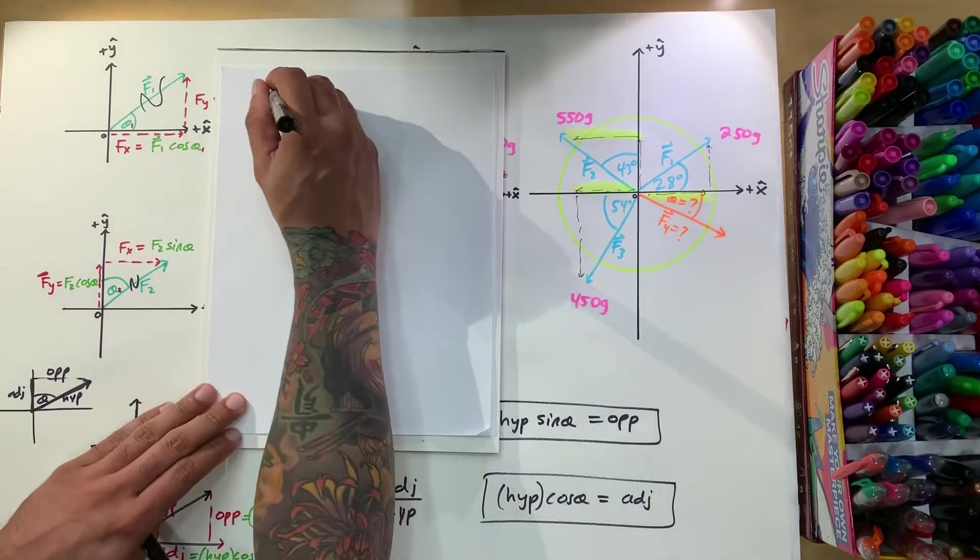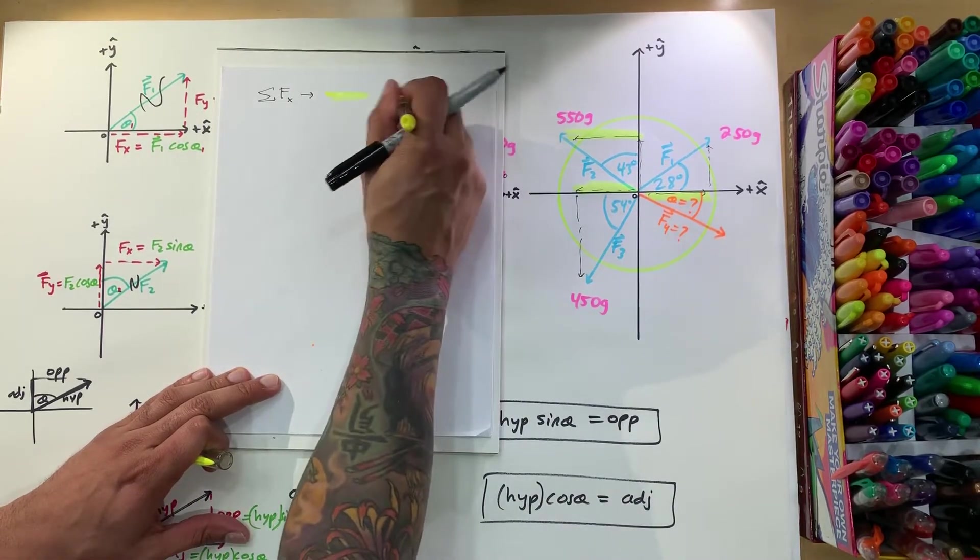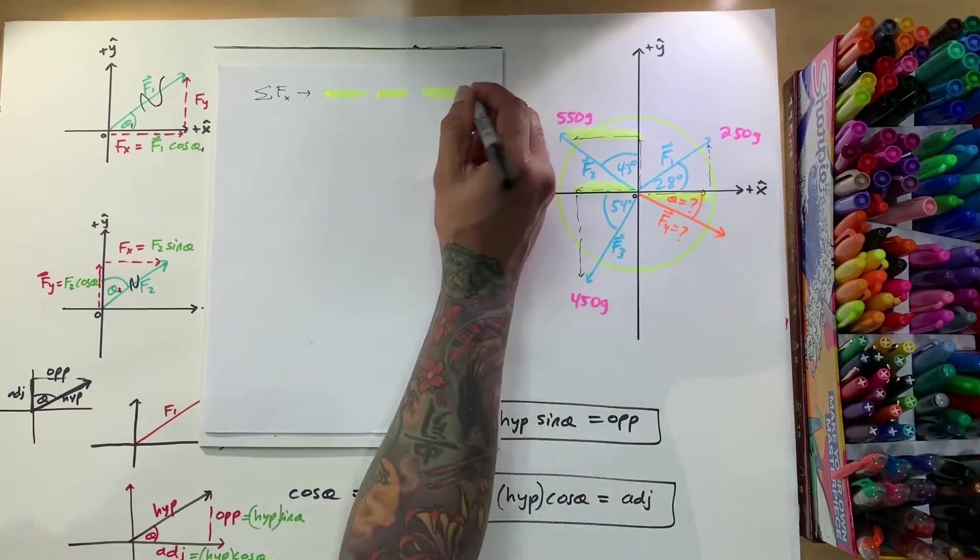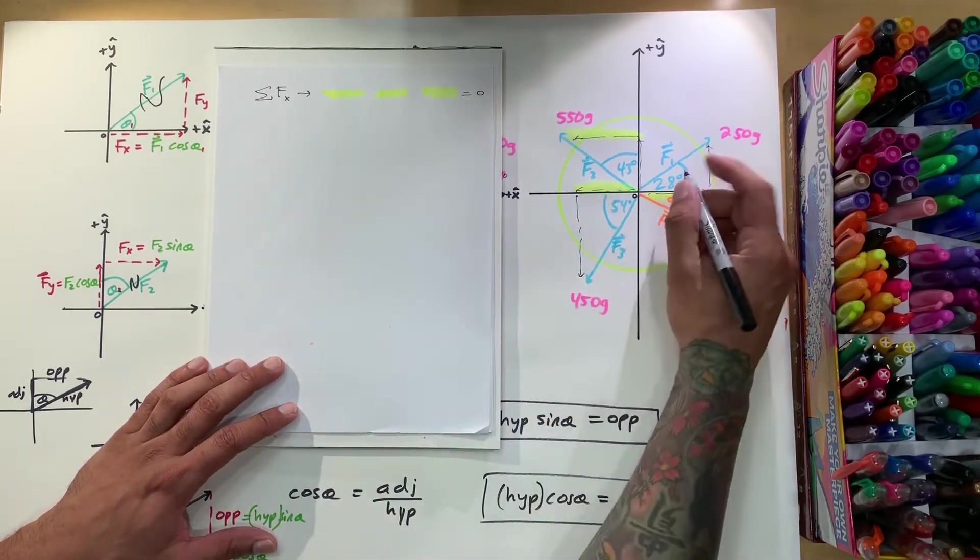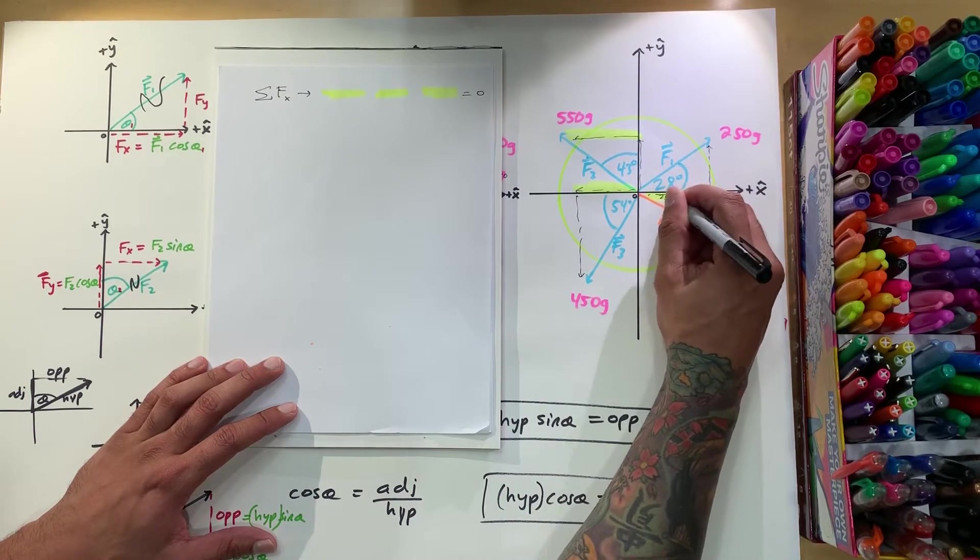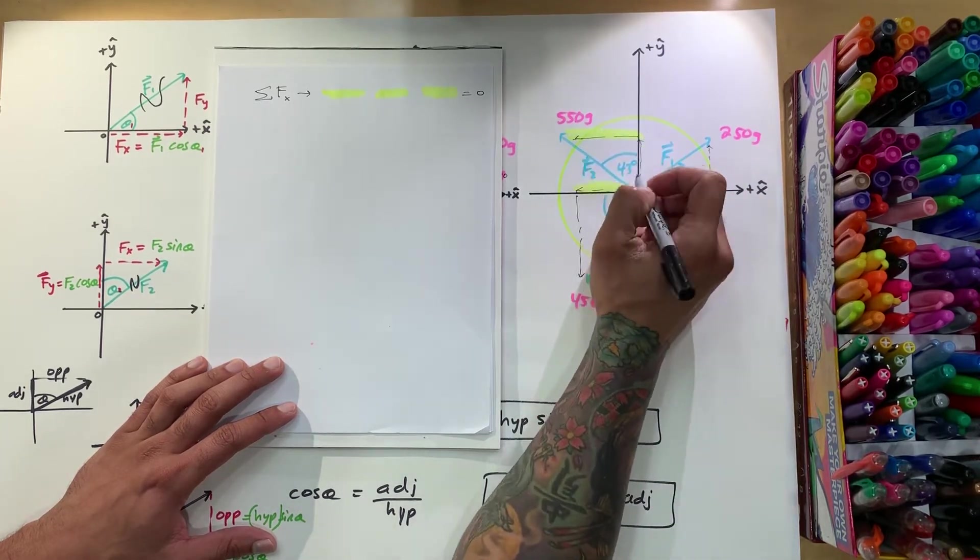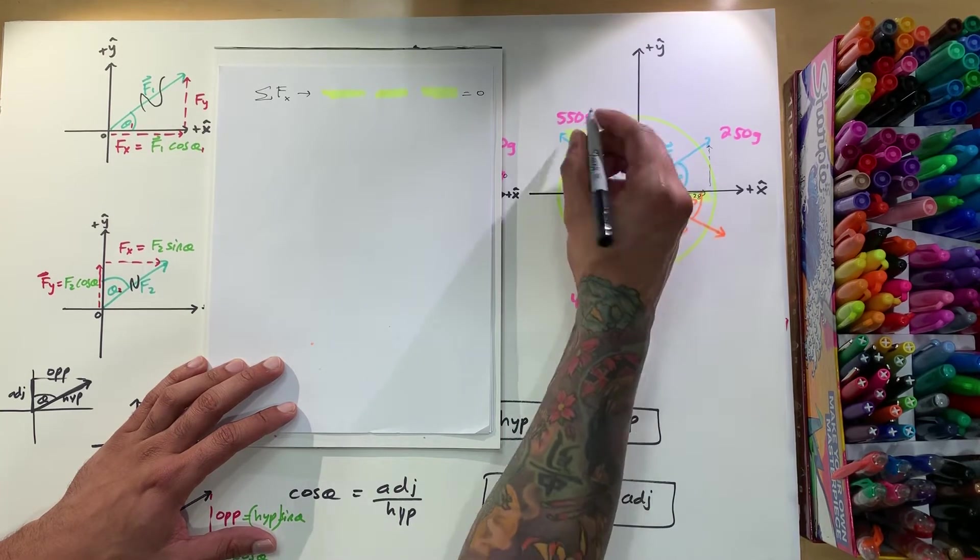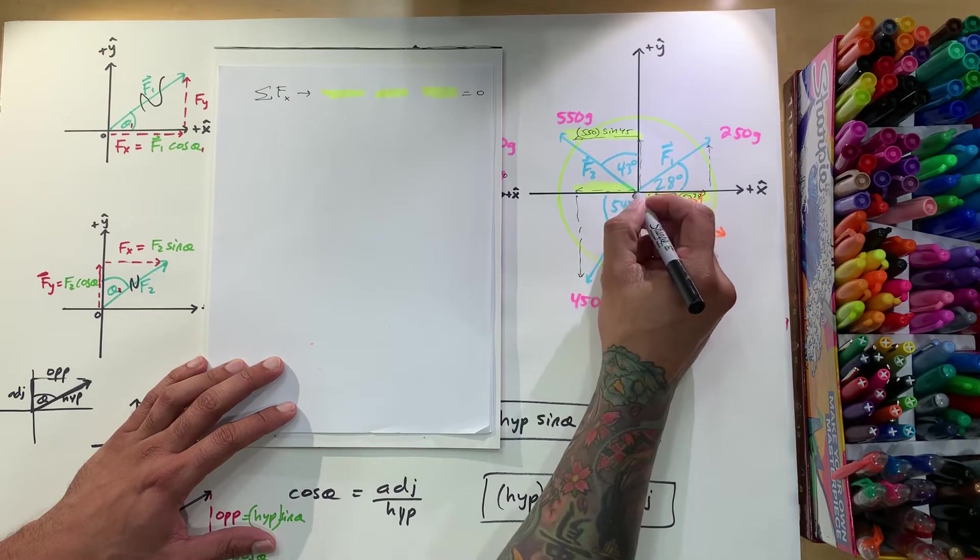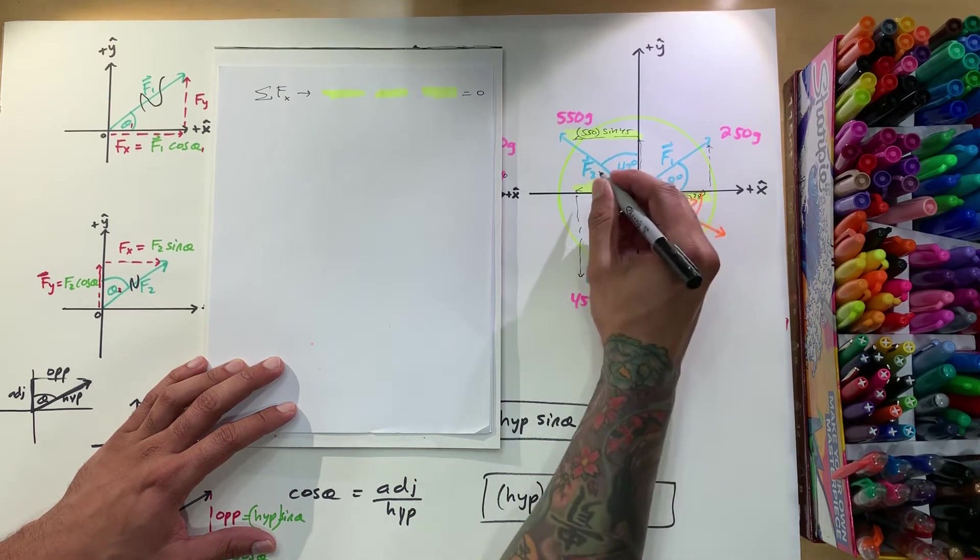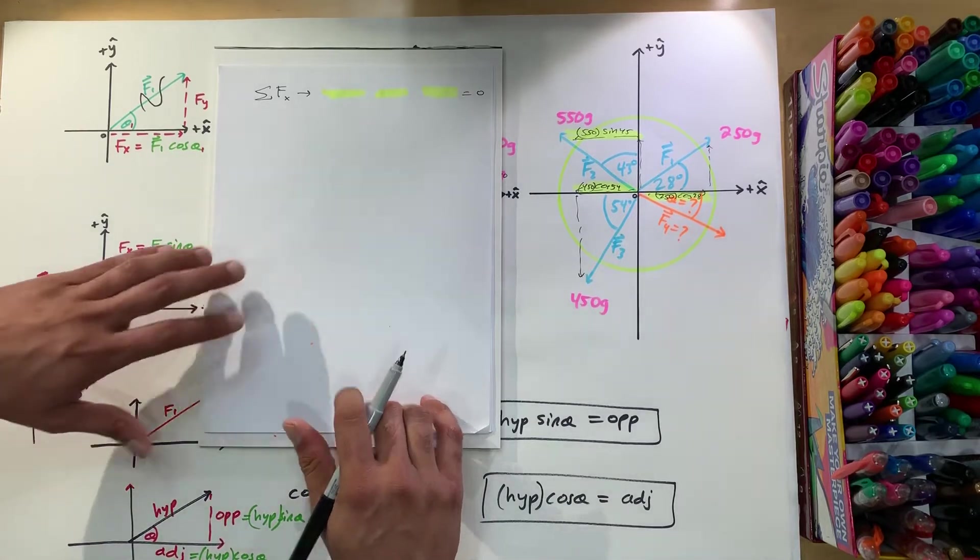Okay, sum of forces in the x direction. And let's put these three highlighted spots. Alright, remember that everything is at equilibrium, so it's going to be equal to zero. So what do we got? We have, for f1 here, we have 250, which is the hypotenuse, times cosine of 28. Over here, we have opposite over hypotenuse. So 550 times sine of 45. And here we have adjacent over hypotenuse. So that's 450 times cosine of 54.